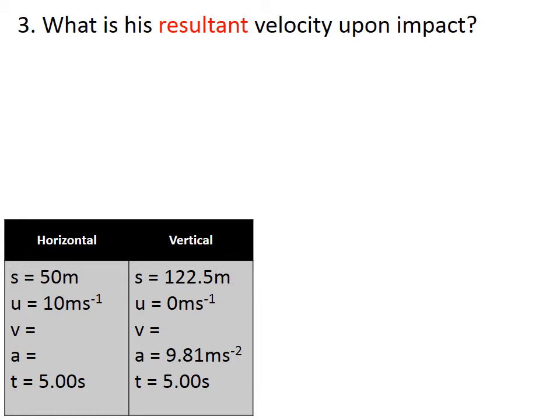We have to figure out the resultant velocity upon impact. We've got everything we've learned so far here in our SUVAT table. Velocity is a vector quantity, therefore it has magnitude and direction, so we're going to need to figure out what velocity he hits at and the angle.